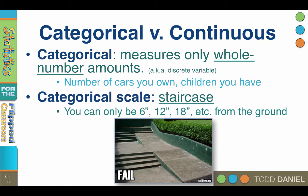Categorical scales are like a staircase. Unlike the ramp, when you're standing on the stairs, you can only be 6 inches, 12 inches, 18 inches, etc., from the ground. There is no place on the stairs where you could stand 9 inches off the ground, because the stairs are in categories of 6 inches each.